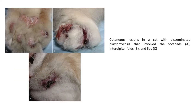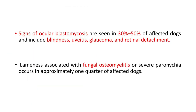Cutaneous lesions in a cat with disseminated blastomycosis involve the foot pads, interdigital folds, and lips. Signs of ocular blastomycosis are seen in 30 to 50% of affected dogs and include blindness, uveitis, glaucoma, and retinal detachment. Lameness associated with fungal osteomyelitis or severe paronychia occurs in approximately one quarter of affected dogs.